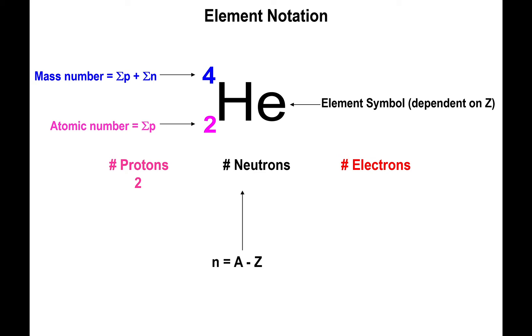The number of neutrons is simply determined by the difference between the mass number and the atomic number, because after all, the mass number is protons plus neutrons. Subtract the number of protons from the mass number, automatically you are left over with just the number of neutrons. So in this case, we have four minus two, which is, in other words, two neutrons. And the number of electrons, if the element has no charge written on it, the number of electrons is equal to the number of protons.